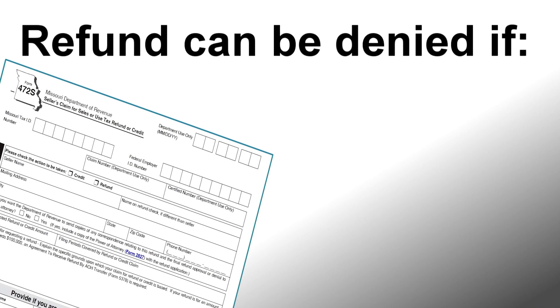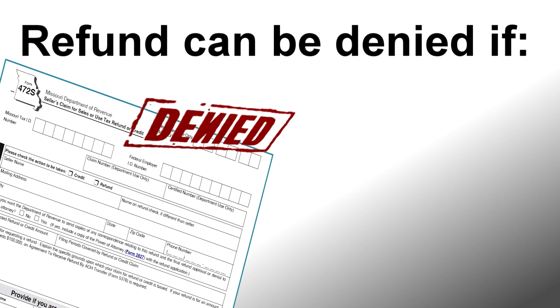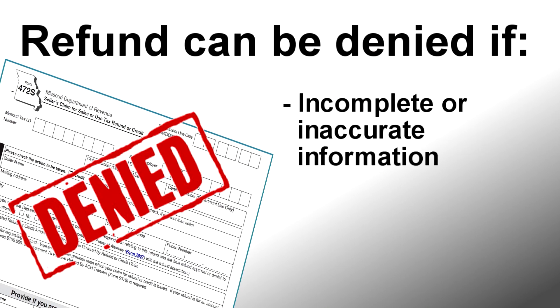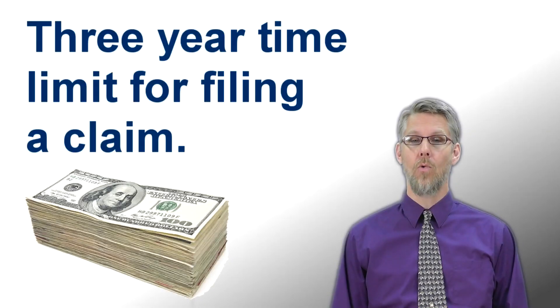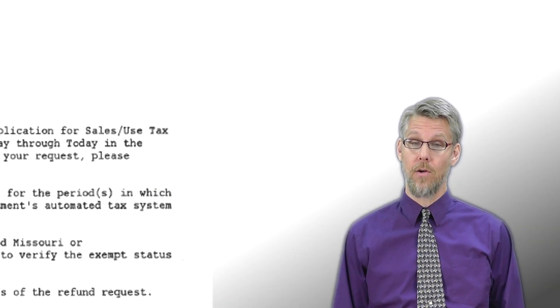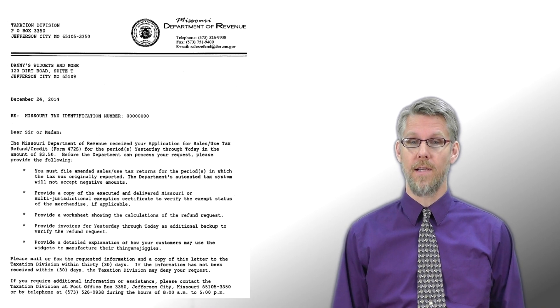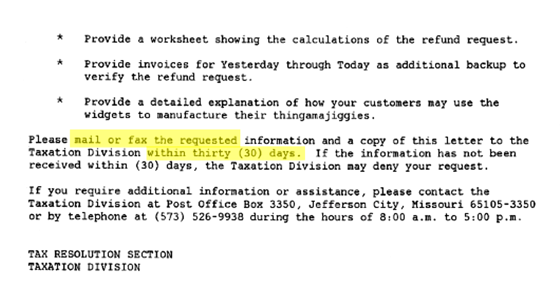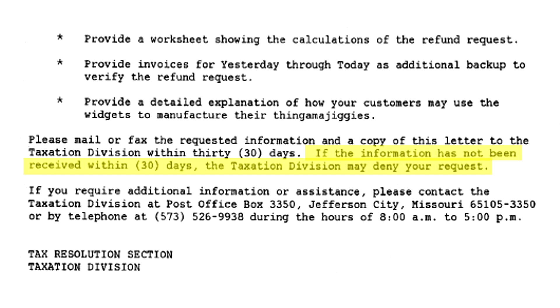Thank you for your help — we'll file our claim right away, and we'll be sure not to file two returns for the same period again. Remember: a taxpayer's claim for refund can be denied if it does not provide complete and accurate information to support the claim, if the claim is not valid, or if the claim is made later than the law allowed. No refund or credit is allowed unless the claim is filed within three years from the date of overpayment. If the department has further questions after reviewing your claim, a letter will be sent to the address provided on the application. You will have 30 days to respond to the letter and provide the additional information.